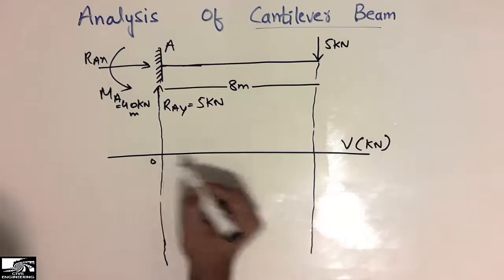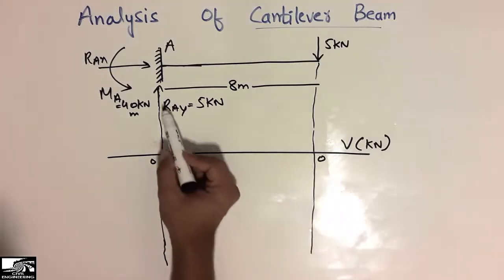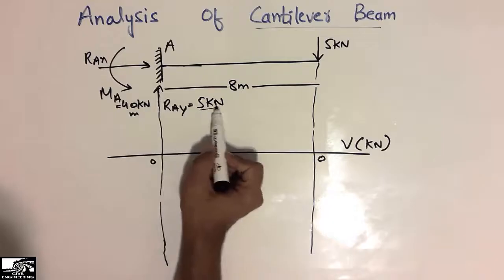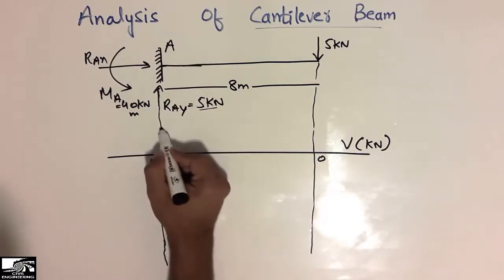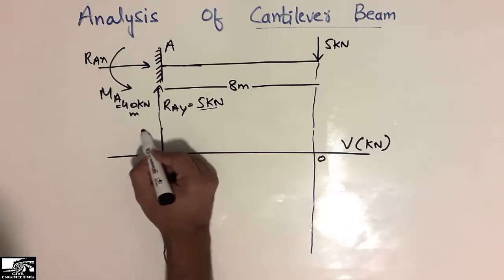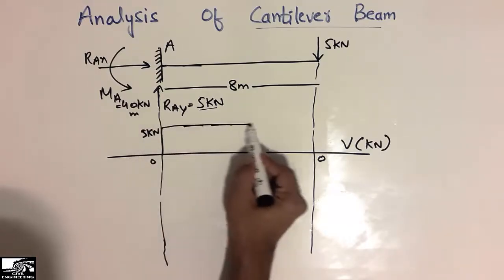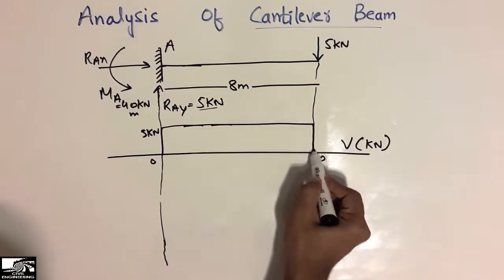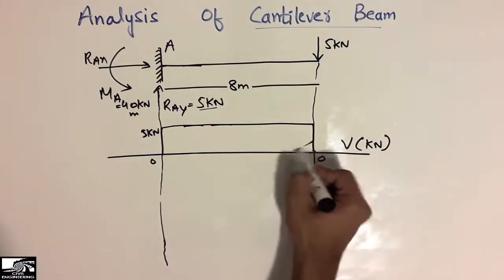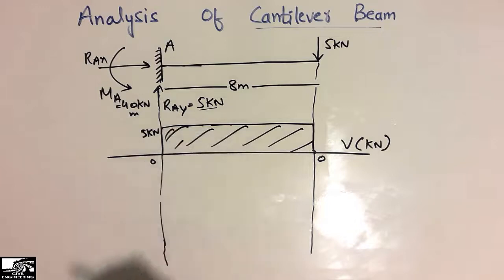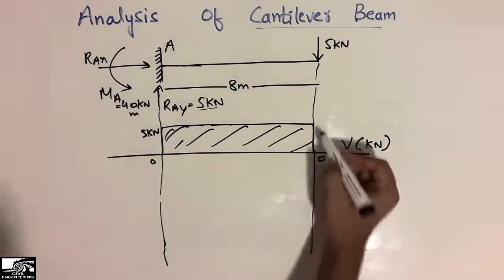Starting from the zero reference line for shear force: the reaction at A is 5 kN directed upward, so we draw the shear force line up to 5 kN. Since there is no load along the span, the line remains straight. At the free end, the 5 kN load acts downward, bringing the diagram back to zero. This is the shear force diagram with a maximum magnitude of 5 kN.